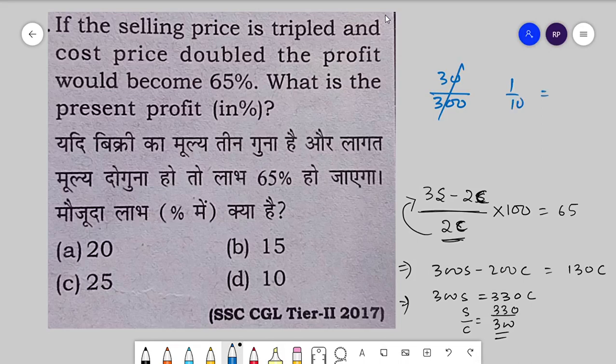30 is 1 by 10, or you can say 10%. Okay, this is the answer — a CGL Tier 2 2017 question. You can understand it. Subscribe, and let's move on to the next question.